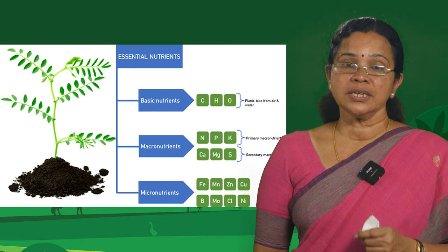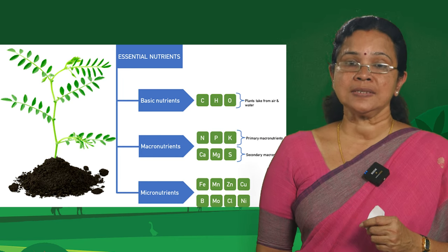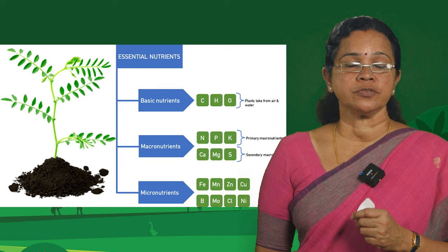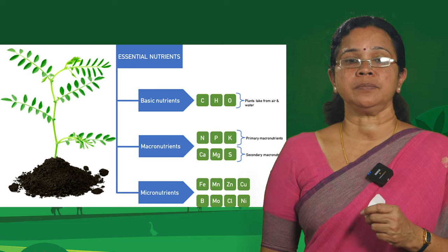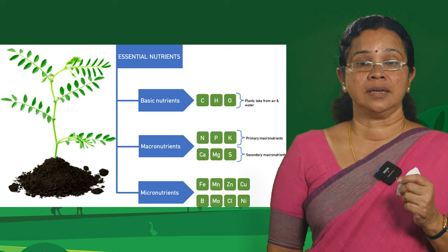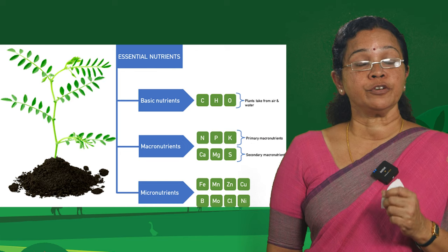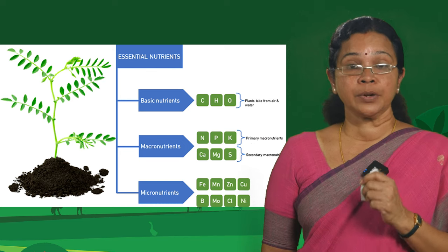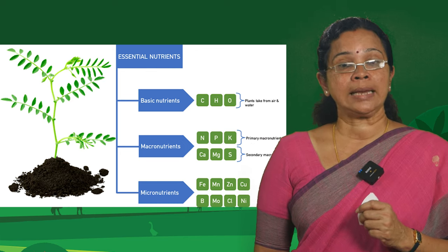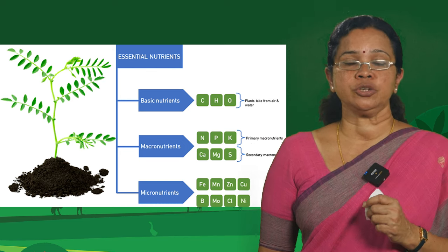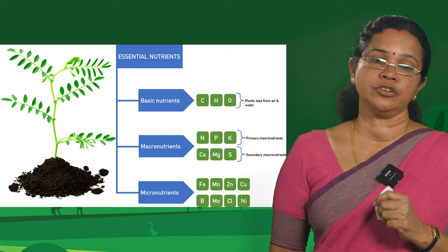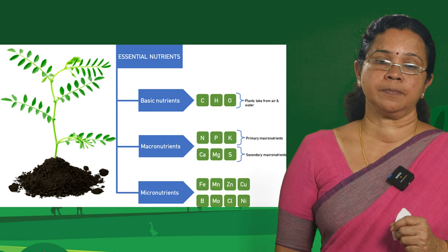Of these six, the first three — nitrogen, phosphorus and potassium — are referred to as the primary nutrients, often called the three giants. While calcium, magnesium and sulfur are known as the secondary nutrients.